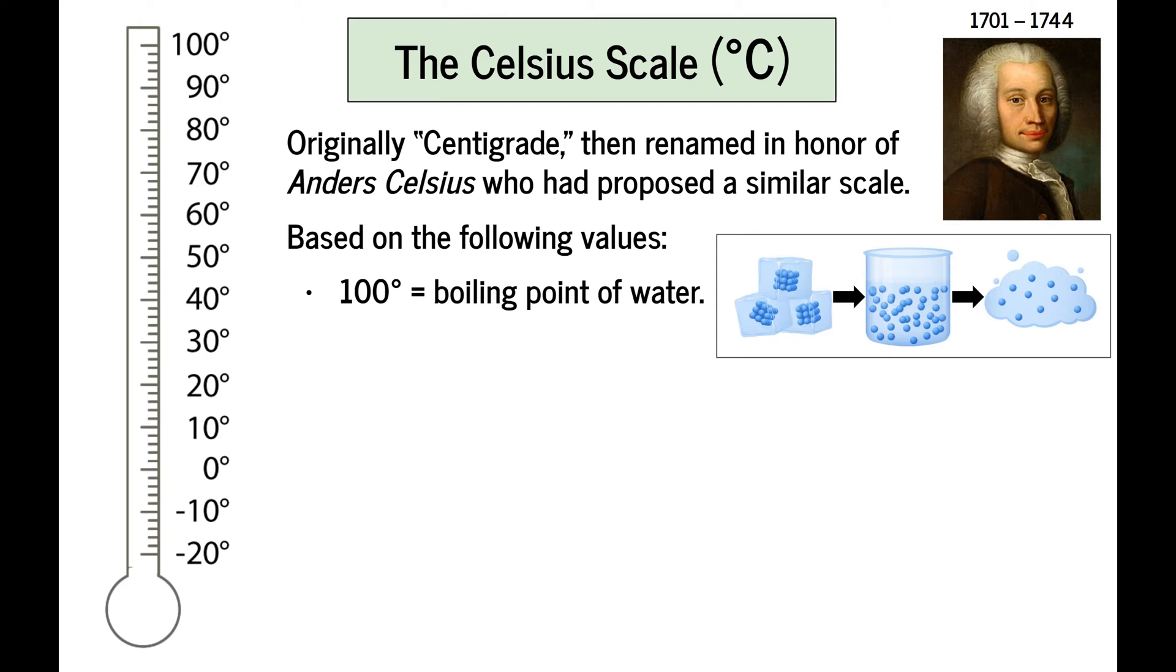Celsius is based on the following values. 100 degrees Celsius is defined as the temperature at which liquid water will boil. And 0 degrees Celsius is defined as the temperature at which liquid water will freeze. Most humans around the world, and all scientists, including those in the United States, use Celsius as their primary scale for determining temperature.